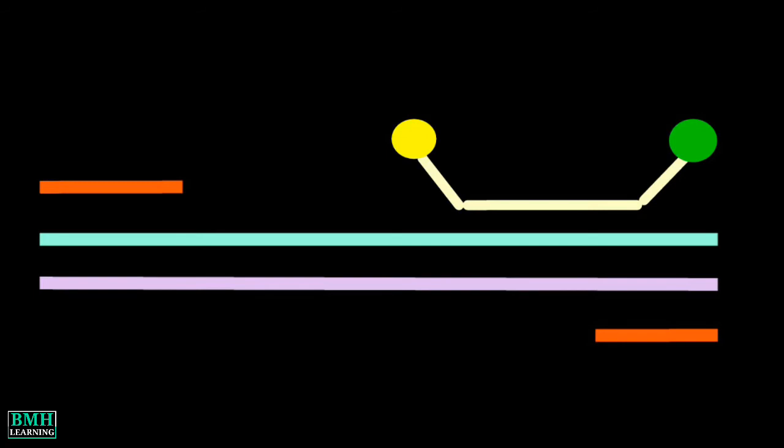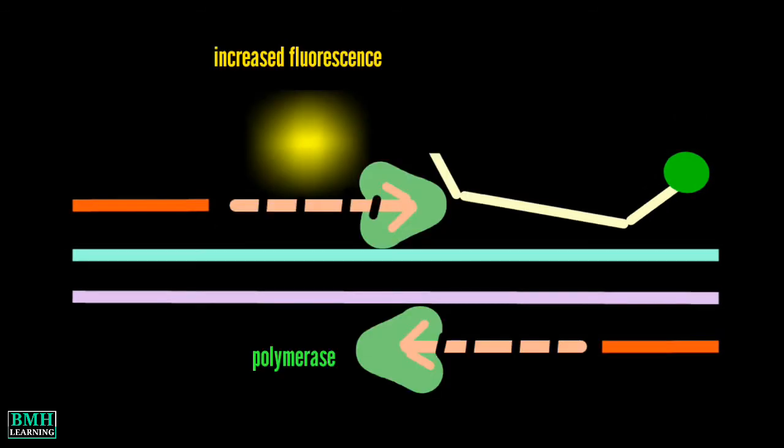If the target sequence is present, the probe anneals downstream from one of the primer sites and is cleaved by the 5' nuclease activity of Taq DNA polymerase as this primer is extended.